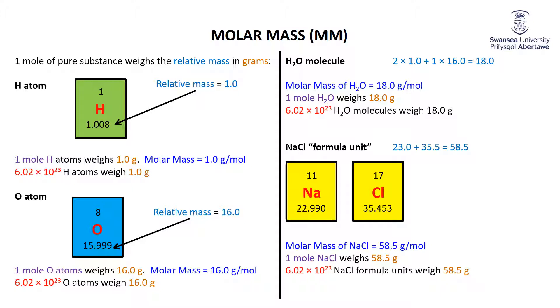So: take the relative mass from the periodic table, use it as the atomic mass or molecular mass, and that relative mass becomes the mass of one mole — the molar mass. That tells you how to go from number of sub-microscopic particles to mass.